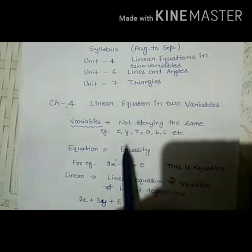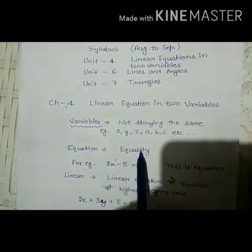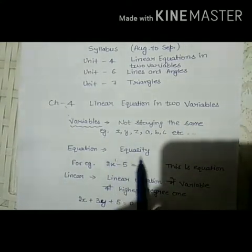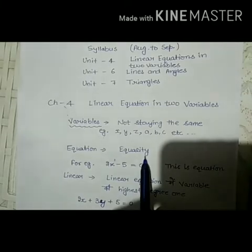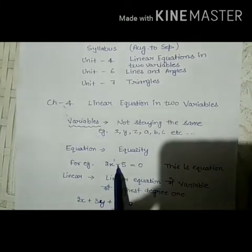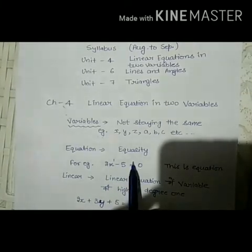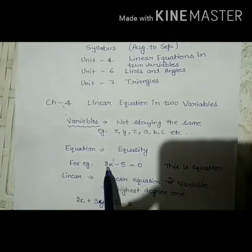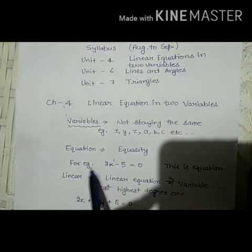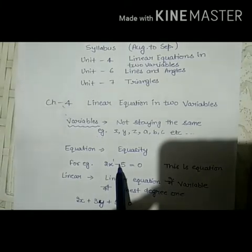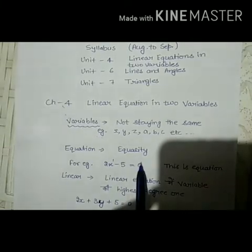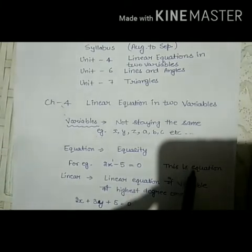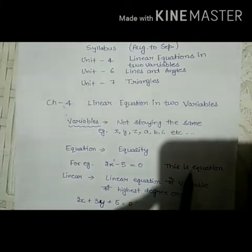Equation means equality — the left-hand side and right-hand side are equal. For example, 2x minus 5 is equal to 0. This is an equation.